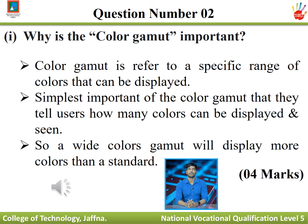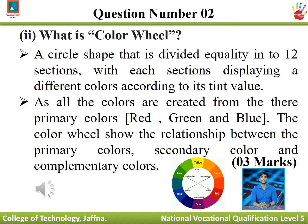Question number two, part one: why is color gamut important? Color gamut refers to the specific range of colors that can be displayed. A wider color gamut will display more colors than the standard. Part two: what is the color wheel? The color wheel is a circle shape divided equally into 12 sections, with each section displaying a different color according to its value.